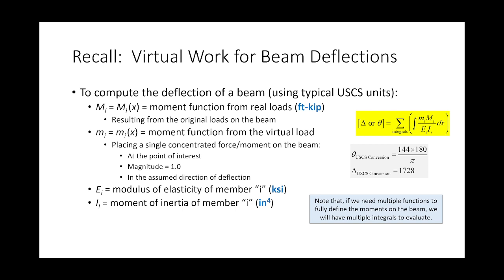But with beams, the moment changes as a function of X. The moment is not constant across the beam. So we have to sum up the energy, and that means integrating. Instead of summing little M, big M, L over EI, we're integrating little M, big M over EI across the applicable ranges and summing up those integrals. We need conversion factors: 1728 for deflections and 144 times 180 over pi for rotations in degrees.